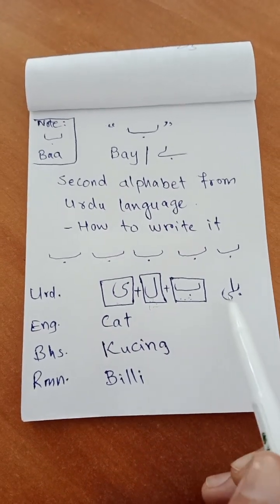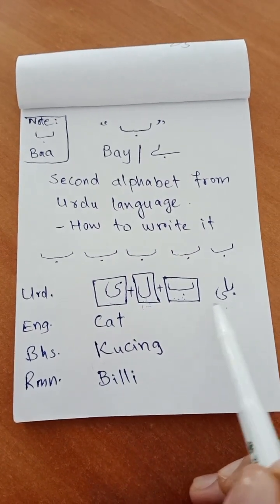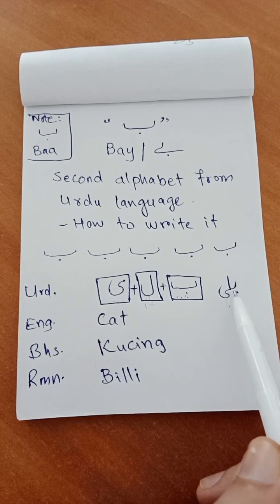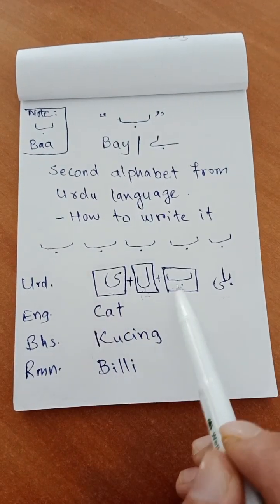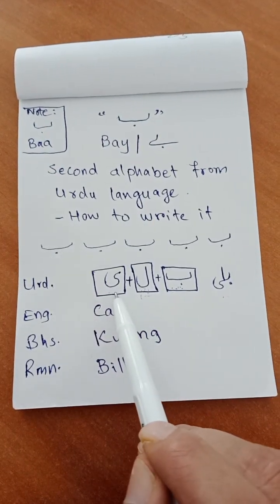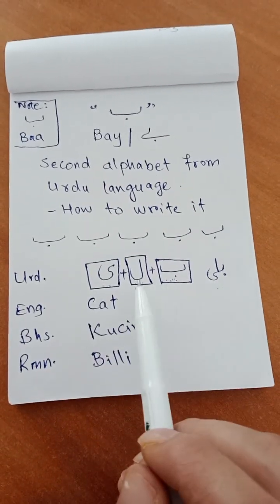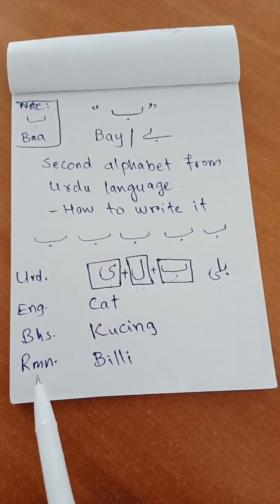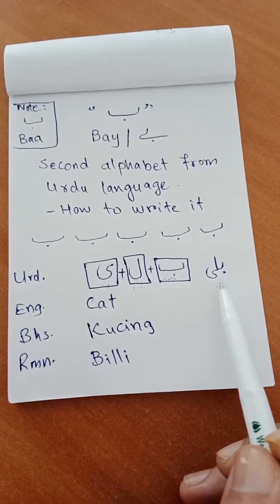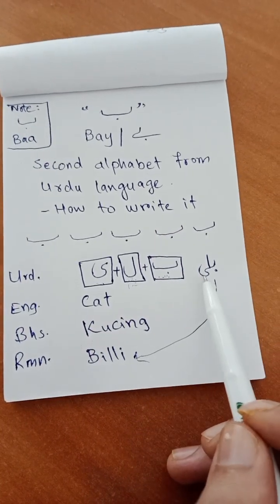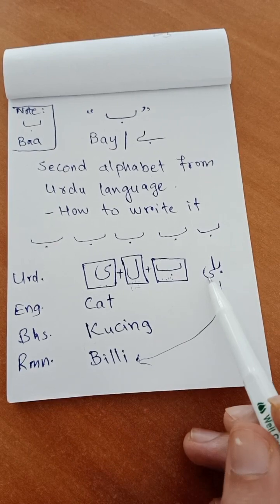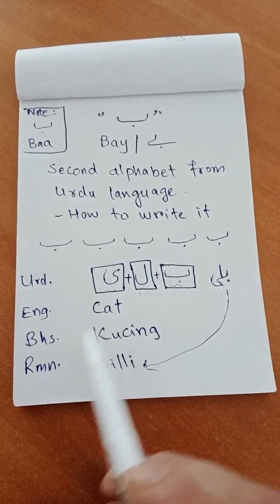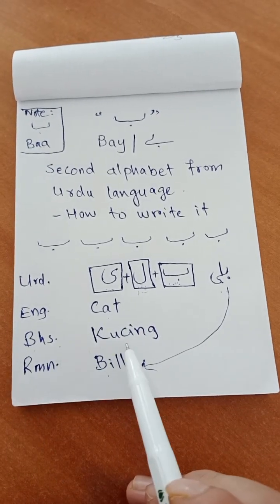The Bay letter is used in words like Billi. Billi consists of three alphabets: Bay, Laam, Chotiye. This is called Billi in Urdu, with the pronunciation Billi. For your easy understanding in Roman it is written as Billi. In English we call it Cat — and in Bahasa we call it Kuching.